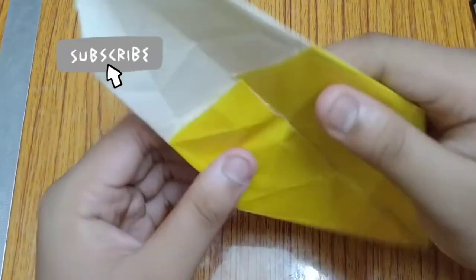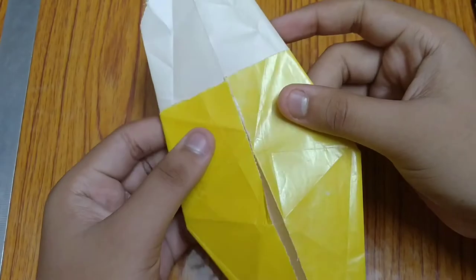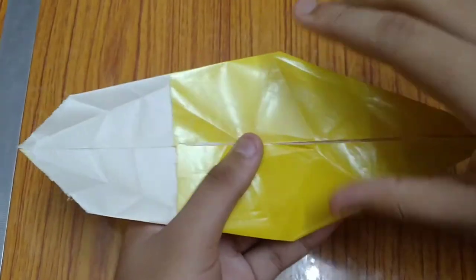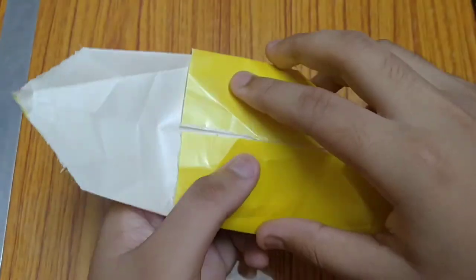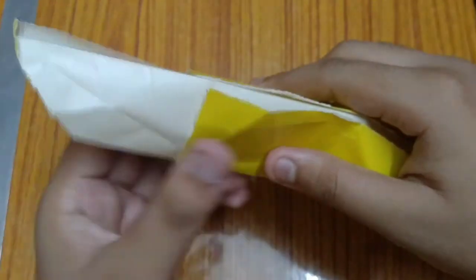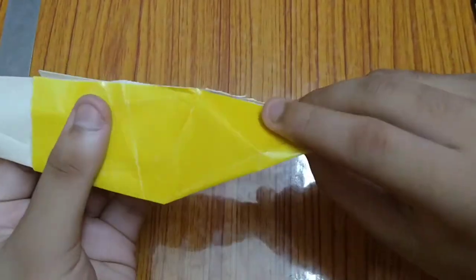Now turn over the page once more. So we get these two parts, this white one and this yellow one. Now fold this one along the center.